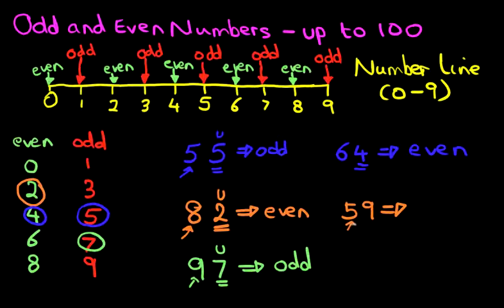I'm going to work through this. I'm going to ignore the five and concentrate on the nine, which is the units. Where does nine appear on the chart? It's over here. So nine is an odd number. Therefore, 59 is an odd number.